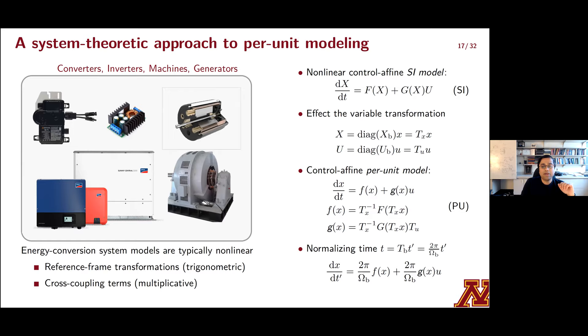So next, what we're going to do is we'll define some vectors, small x and small u. And these are normalized or per unit values of the states and inputs, which were the capital X and capital U. And this relationship is captured by these transformation matrices between the two sets, Tx and Tu. These are diagonal matrices that stack up the base values for the states and inputs along the main diagonal. So then we can obtain the dynamics for small x and small u. These are reported in the equation tagged Pu. And interestingly, the vector fields small f and small g that drive these per unit dynamics have the same structure as capital F and G since these matrices Tx and Tu are diagonal.